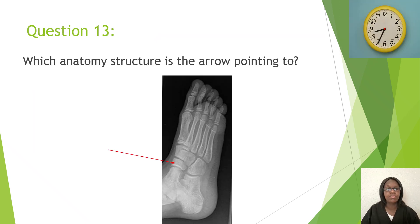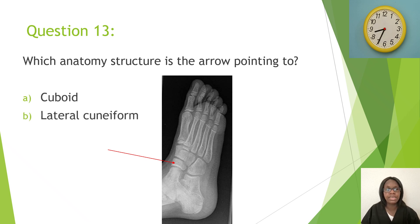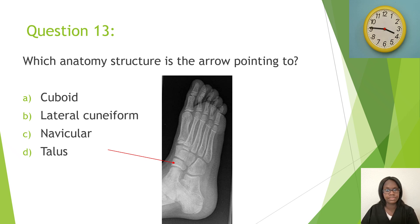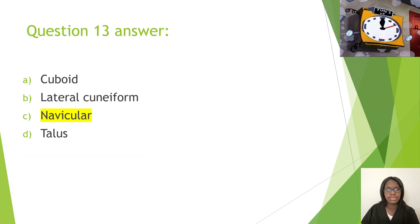Question thirteen: Which anatomy structure is the arrow pointing to? A, cuboid; B, lateral cuneiform; C, navicular; D, talus. The correct answer is C, navicular.